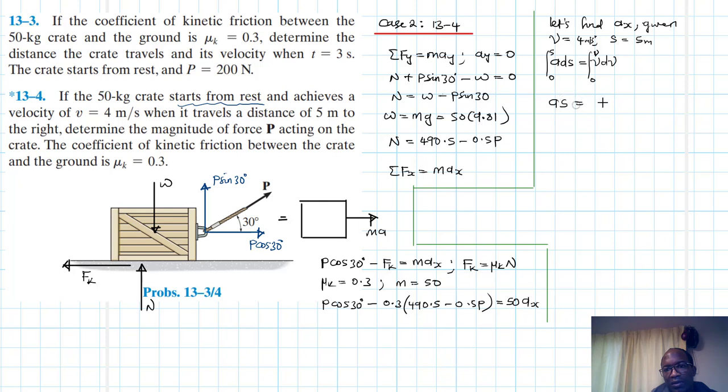So this just becomes A times S is equal to V squared divided by 2 which you can write as A is just equal to V squared divided by 2S.